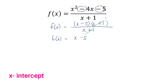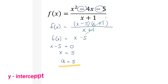Step 2 is to equate the function to 0. By APE, x = positive 5. Therefore, the x-intercept is positive 5, meaning the graph will intersect the x-axis at positive 5.